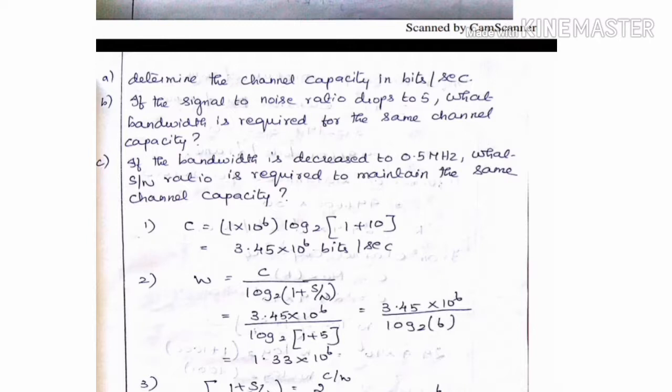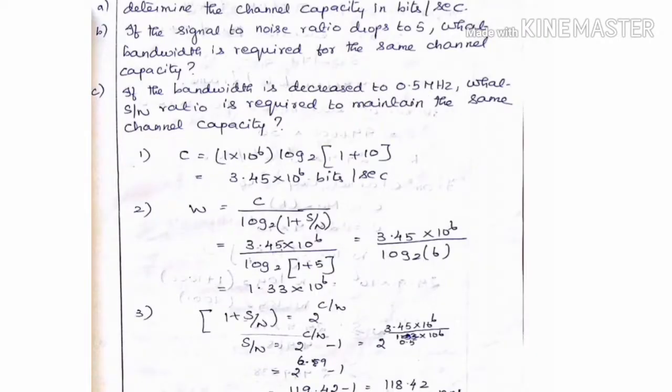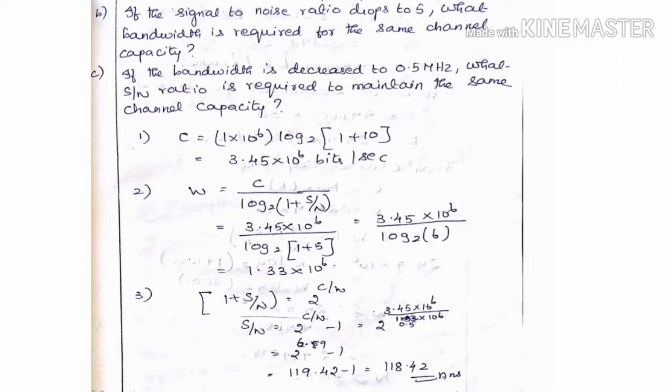For the third part, we derive the S by N ratio. The balance term gives 2 to the power C by W. S by N is equal to 2 to the power C by W minus 1. That gives 2 to the power 6.59 minus 1, and the answer is 118.42.